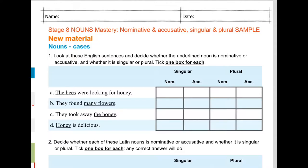Here we have in the first one the bees. They're doing the looking, so they're nominative. They found many flowers, so the flowers must be accusative because the finding's happening to them. They took away the honey, that's the same, that must be accusative also. And honey is delicious, honey is the subject of is. It's what we're talking about, so that's nominative. And we can also tell that the first two are plural and the second two are singular.